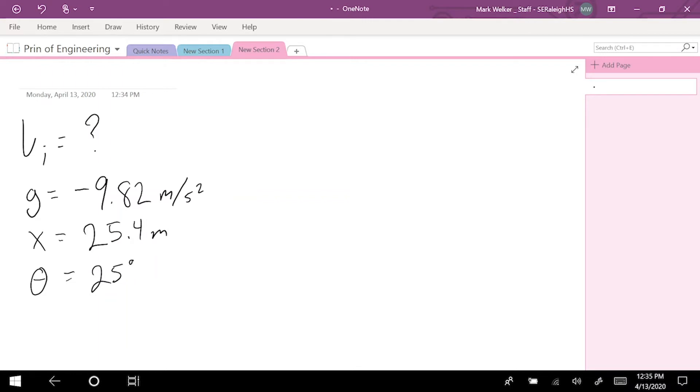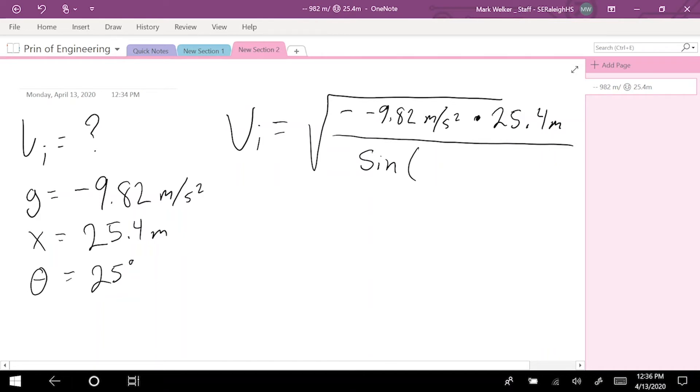When we start looking at our formula, in this case, since we're trying to solve for the initial velocity, we need the square root of negative 9.82 meters per second squared times the distance of 25.4 meters. All of that is going to be over the sine of 2 times theta, so 2 times 25 degrees.